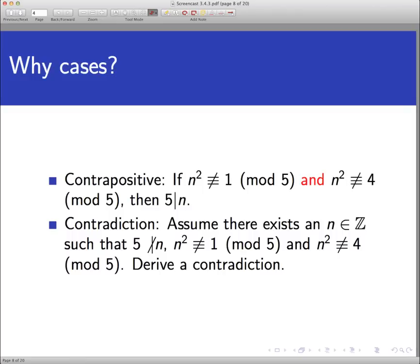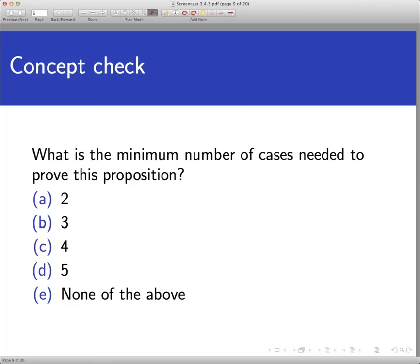A direct proof would involve assuming 5 does not divide n, then showing that either n squared is congruent to 1 mod 5 or n squared is congruent to 4 mod 5. Cases are useful when proving a disjunctive conclusion, because in each case one or the other statement might hold. As a concept check: what is the minimal number of cases needed to prove this theorem — is it 2, 3, 4, 5, or none of the above? Pause the video and come back with your answer.